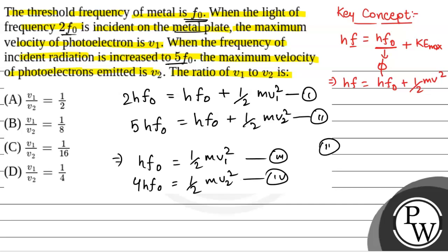Equation 3 divided by equation 4, we will have 1 by 4 is equal to v1 squared by v2 squared. So, from here we have v1 by v2 is equal to 1 by 2.